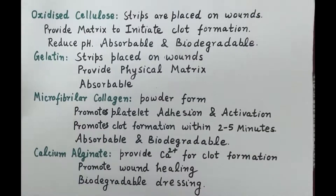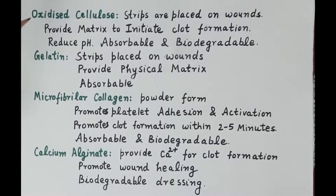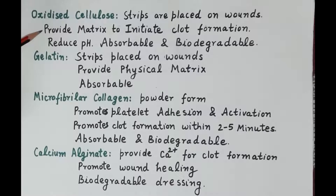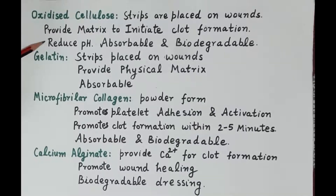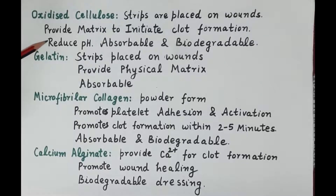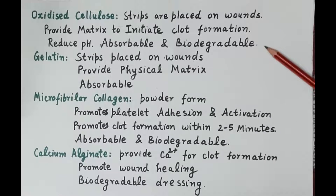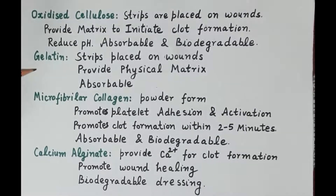The next locally acting hemostatic agent is oxidized cellulose. Strips are placed on wounds, providing a matrix to initiate clot formation. Oxidized cellulose reduces pH and therefore exhibits an antimicrobial effect. It is absorbable and biodegradable.